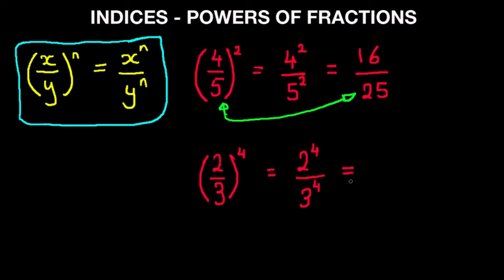Now 2 to the power of 4 is 2 times 2 times 2 times 2, which is 16. And 3 to the power of 4, you should know this by now: 3 times 3 is 9, times 3 is 27, times 3 is 81. So 2 thirds to the power of 4 is 16 over 81.